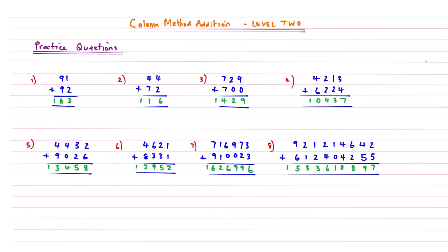Here are the quick answers: number 1 is 183; number 2 is 116; number 3 is 1,429; number 4 is 10,437; number 5 is 13,458; number 6 is 12,952; number 7 is 1,626,996; and number 8 is 1,533,618,897.